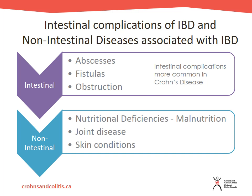Very briefly, let's talk about some of the complications that individuals with IBD may experience. They can be broken into two categories: intestinal and non-intestinal complications. Intestinal complications are more common for individuals with Crohn's disease and include abscesses — which are pockets of infection — fistulas, which are abnormal tunnelings between the intestine and somewhere else in the body, and obstructions, which are a narrowing or blockage of the stool passageway. You may or may not need surgery to treat these complications.